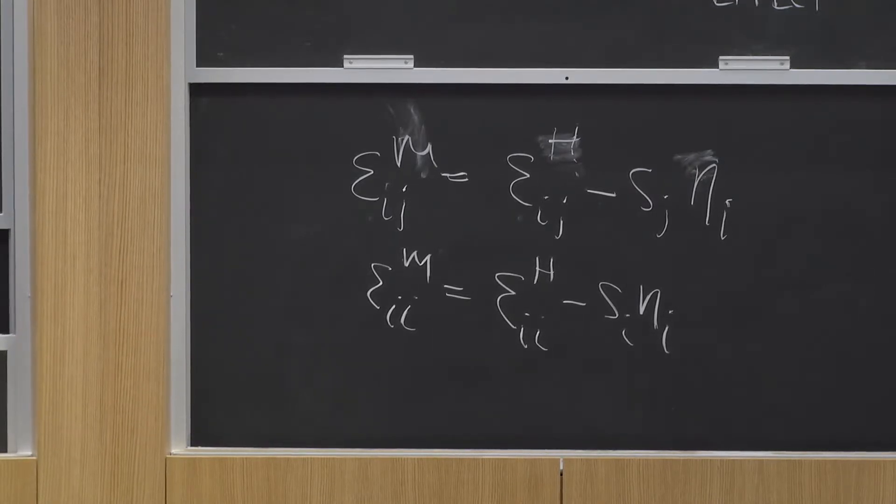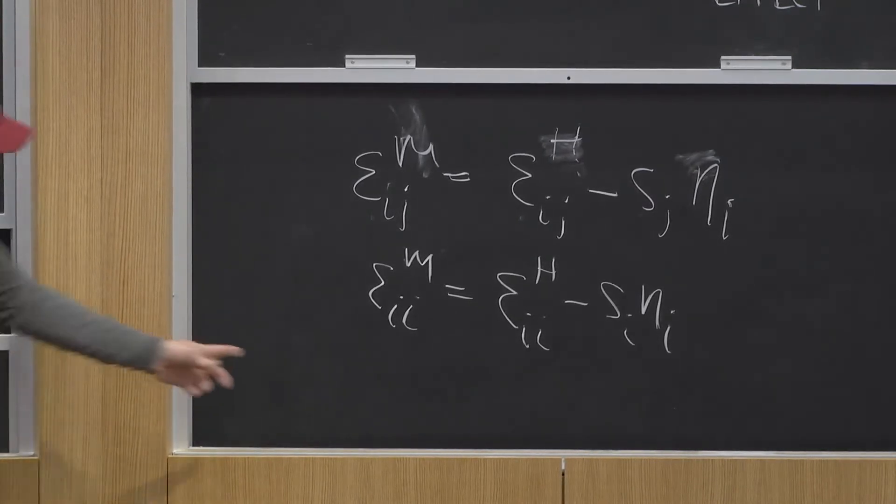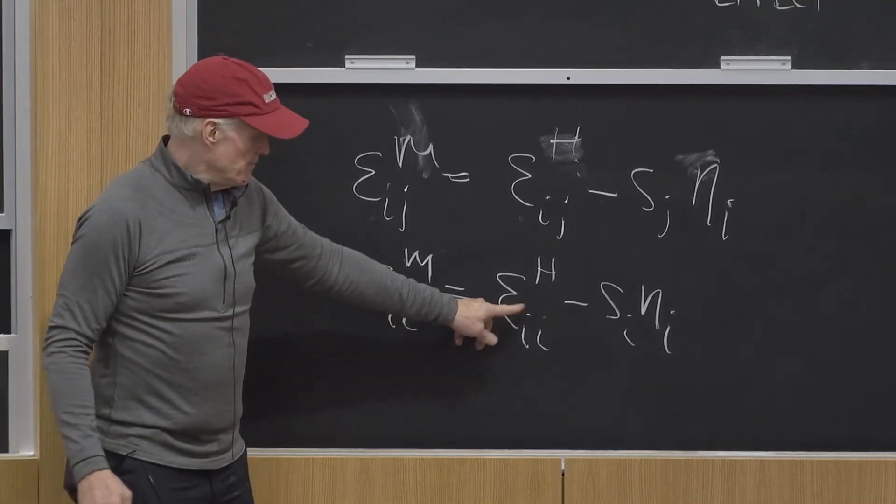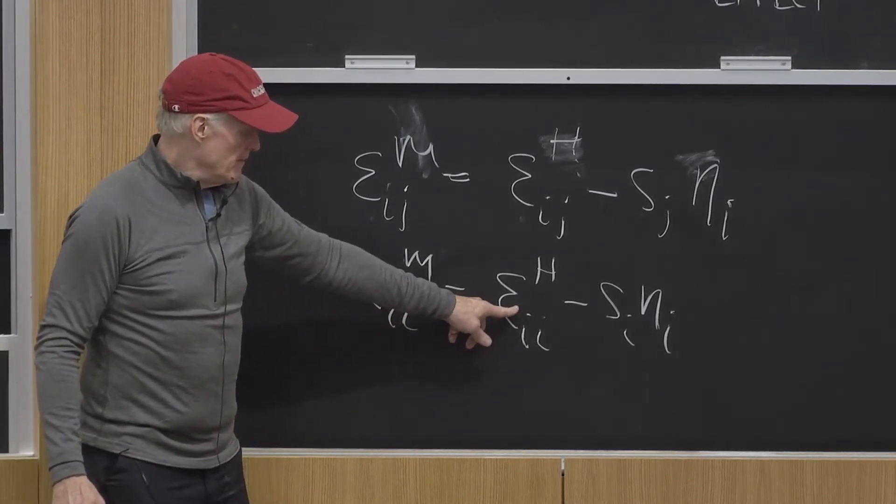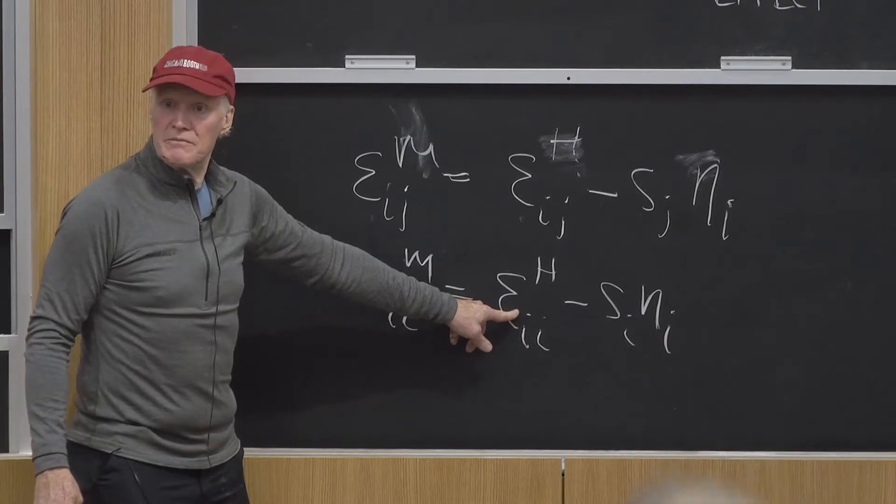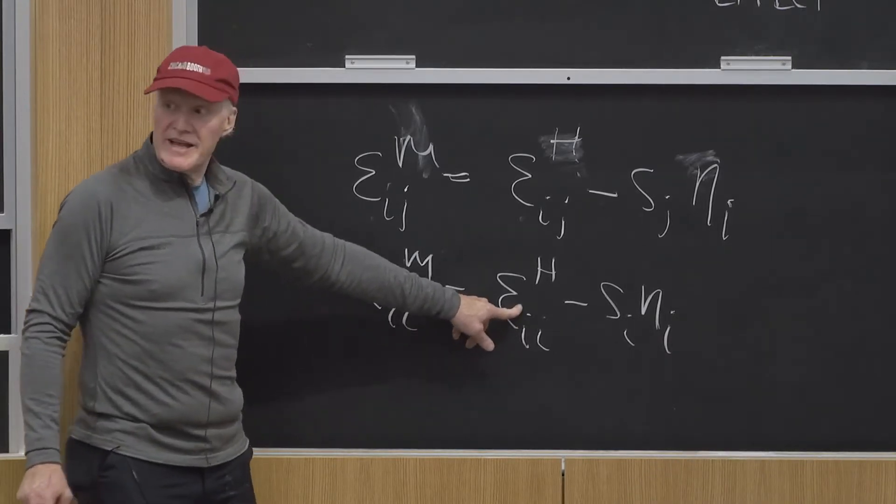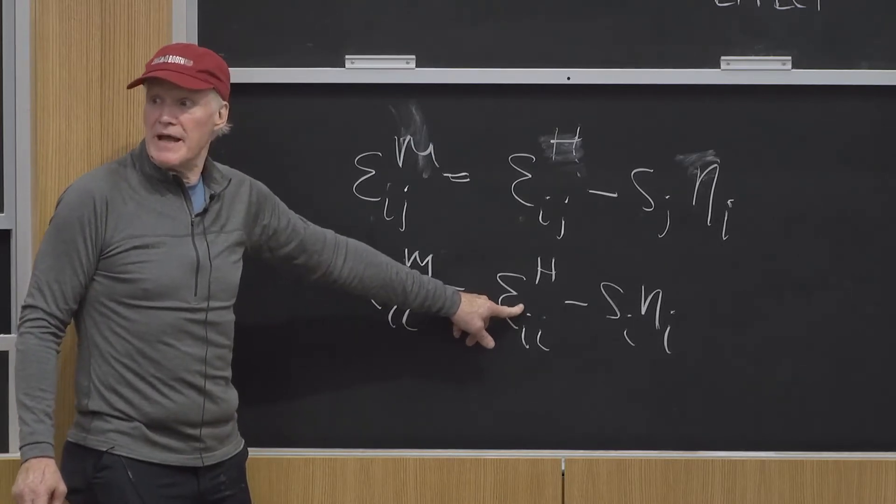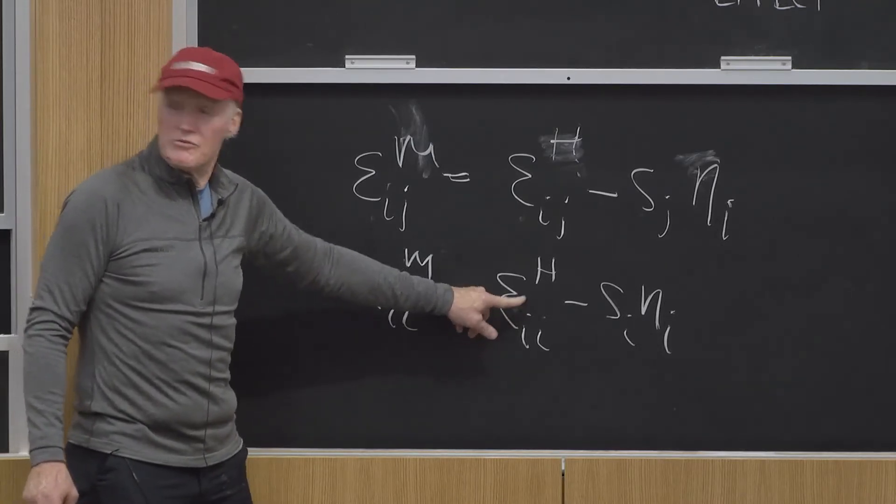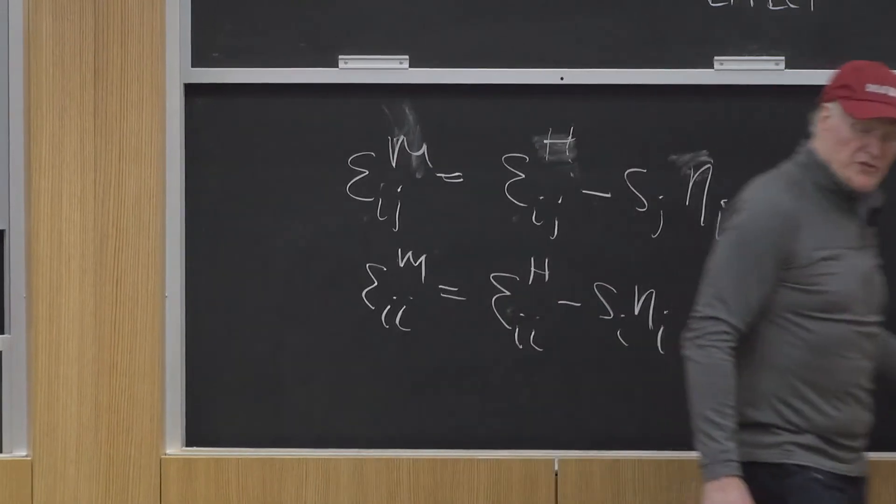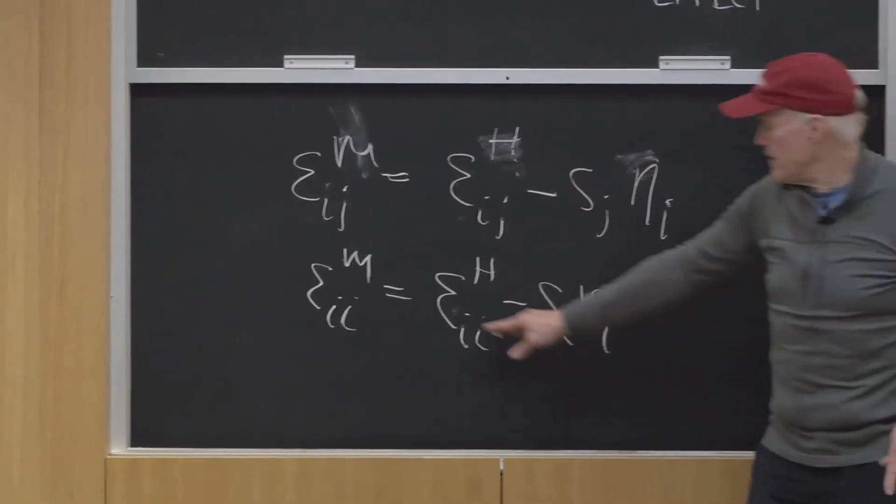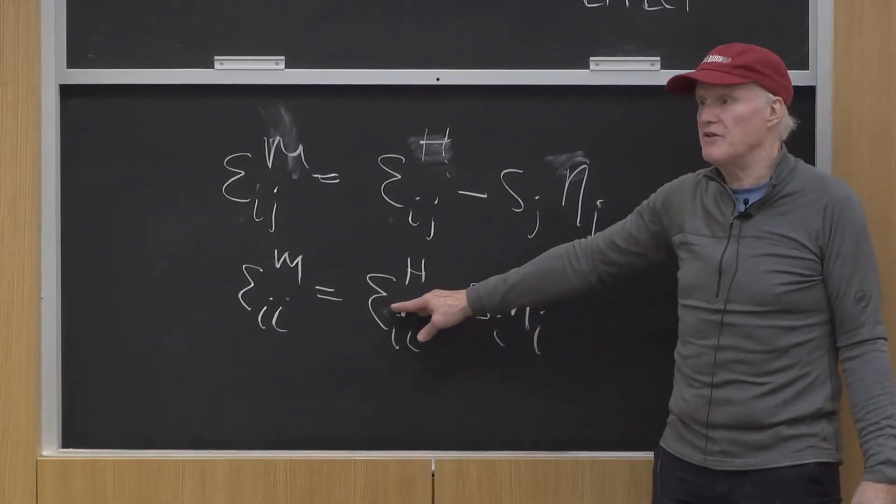So now, if good i is a normal good—remember we already showed this—what's the sign of this term? That's utility constant response to a change in price. Theory tells us that can't be positive, it's got to be negative or zero. That is, when the price goes up, you consume less holding utility constant. We proved that already by concavity of the cost function.